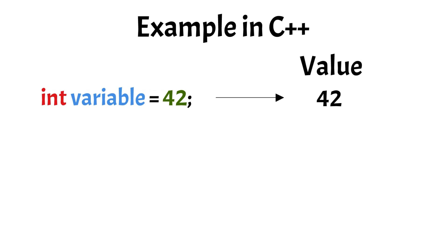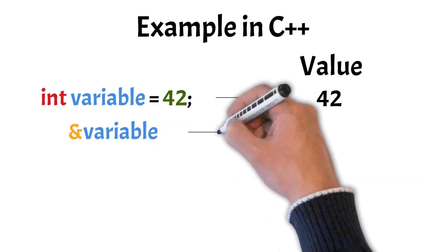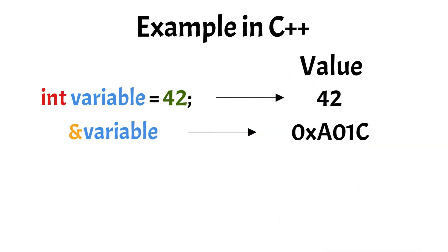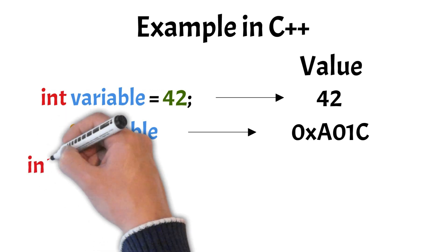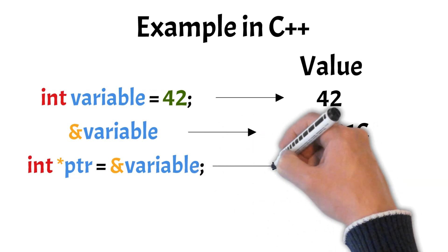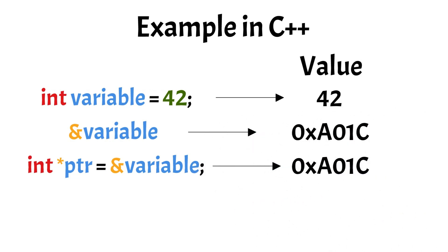Now, if you want to access the address in memory where the value of that variable is stored, you would need to add an ampersand symbol before the variable name. When we initialize a pointer, we want its value to be the address of the variable whose value we want to track. So a line like this would create a pointer that tracks the address of our variable with the value 42.